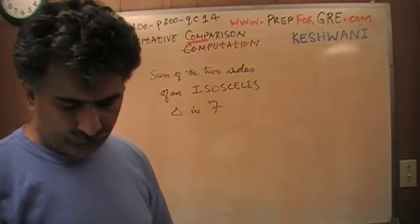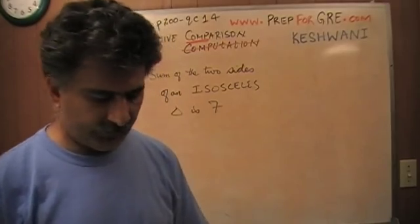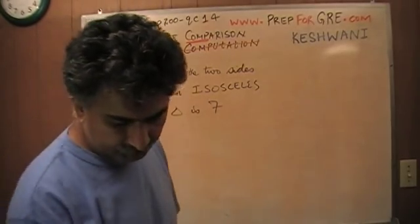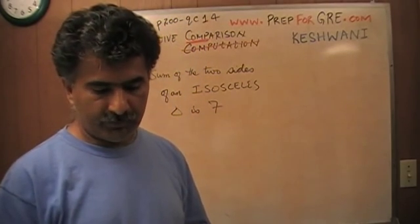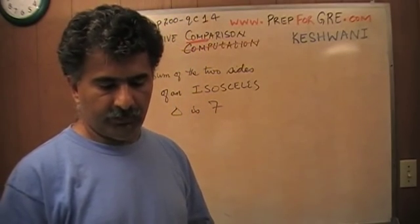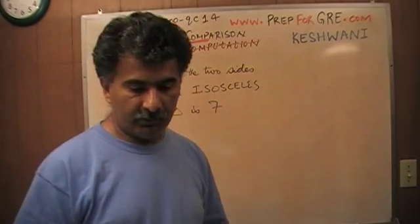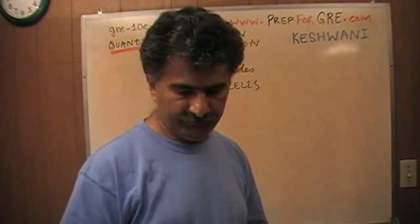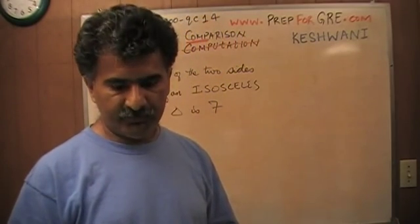The very first thing we need to understand is: what is an isosceles triangle? This question being number 14 tells me that the majority of the people who took the exam got it wrong. About three quarters of the people who took the exam got this particular question wrong — only 24% got it right.